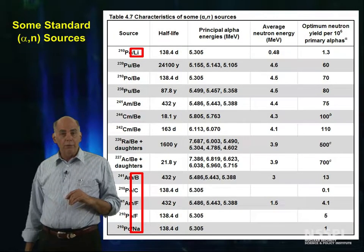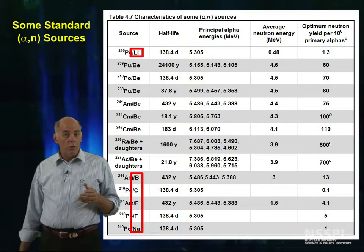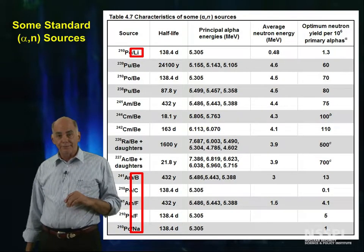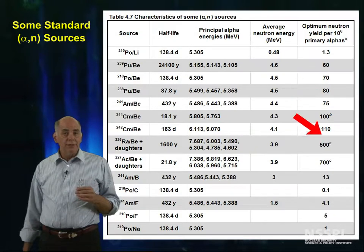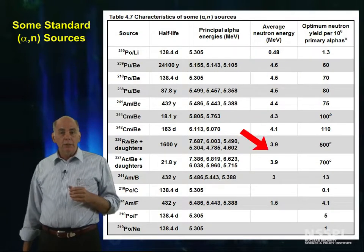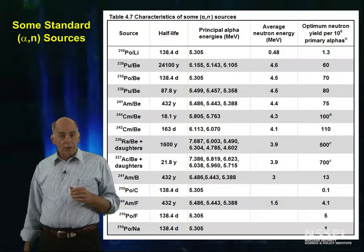Lithium, carbon, fluorine, and sodium will also work as alpha-N targets. We see that the yields and the average energies mostly depend on the target material.